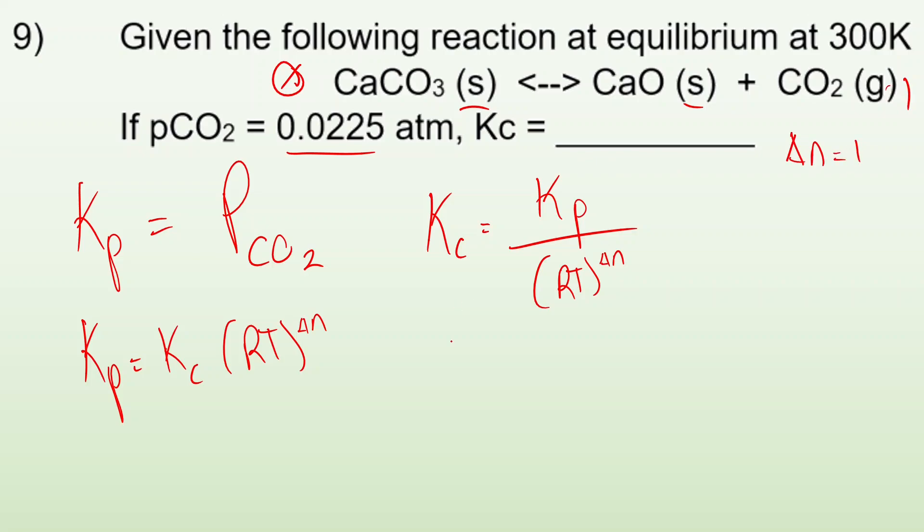So now I can just plug and chuck. Kc equals my Kp, which is 0.0225, divided by R, which is 0.08206 liter atmosphere per mol Kelvin, times the Kelvin, it told me 300 Kelvin. And then all of that is to the one power because of my delta n.